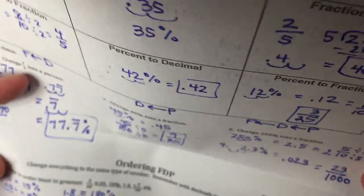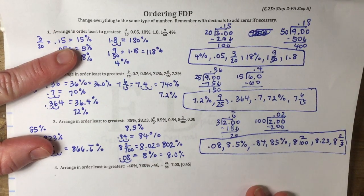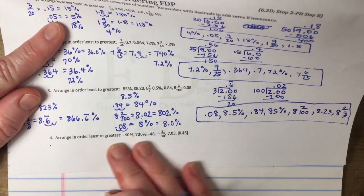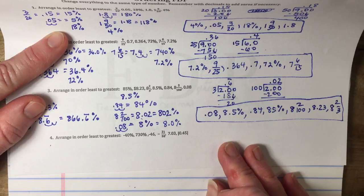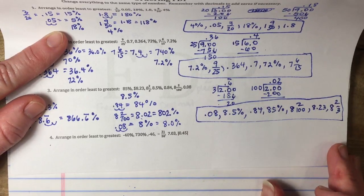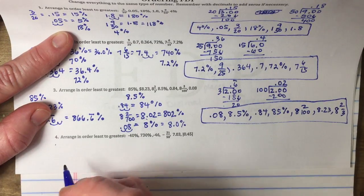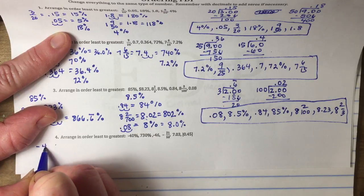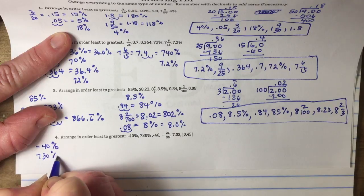In this last example I have some negative numbers. I'll treat these the same as before — negatives come before positives, and negatives get smaller as they move away from zero. The larger the negative, the smaller the number. I have negative 40%, which is already a percent, and 730%, also already a percent.